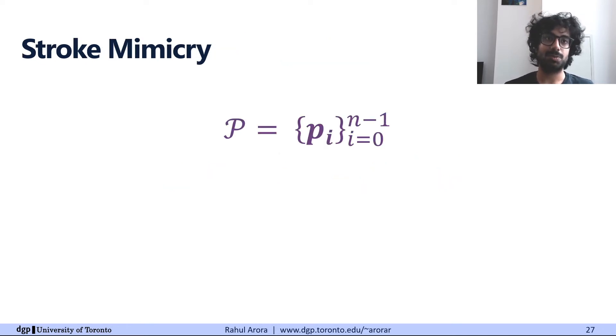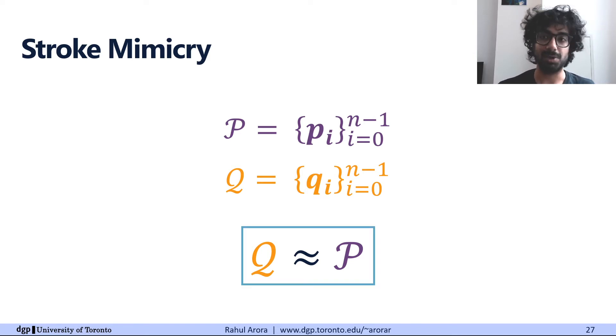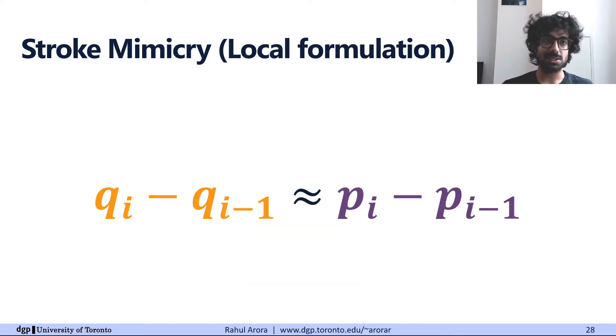I will now describe our new approach to this curve drawing problem, stroke mimicry. The idea is very simple and intuitive. We conducted a lot of pilot trials and we observed this fairly persistent notion of mimicry. That is, if p is the stroke executed in 3D and q is the projected curve that the user desires, then the users would mimic the shape of q in their 3D stroke p. So given p, we want to solve for a q which looks similar to it. And if we look at this locally, say when we have solved for qi-1 and now we want to find qi, we just want the vector difference between the two to match the difference between pi and pi-1.